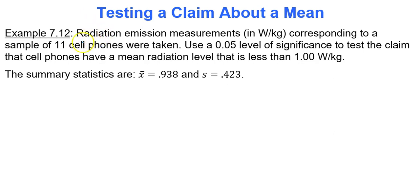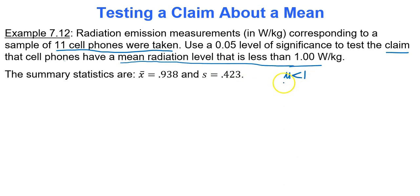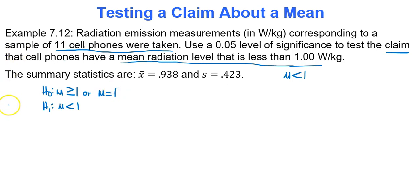Radiation emission measurements corresponding to a sample of 11 cell phones were taken. Use a 0.05 level of significance to test the claim that cell phones have a mean radiation less than one. Since mu less than one does not contain equality, it goes to the alternative hypothesis. The opposite — greater than or equal to one, written simply as equal to one — is the null hypothesis. So the claim mentioned in the question is the alternative hypothesis.